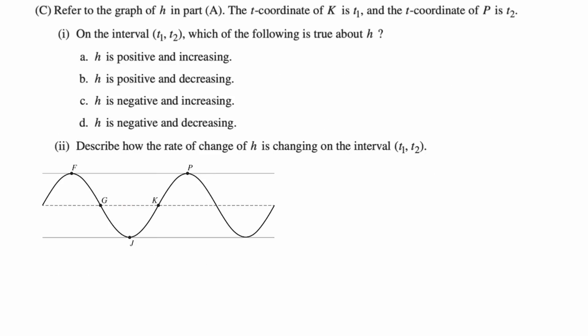So refer to the graph of h in part A. The t-coordinate of K is t₁ and the t-coordinate of P is t₂. On the interval (t₁, t₂), which of the following is true about h? So this is actually, I think, a multiple choice question. I'm just going to circle one. So we're going from K to P. And on that interval, you can see that the function is increasing.